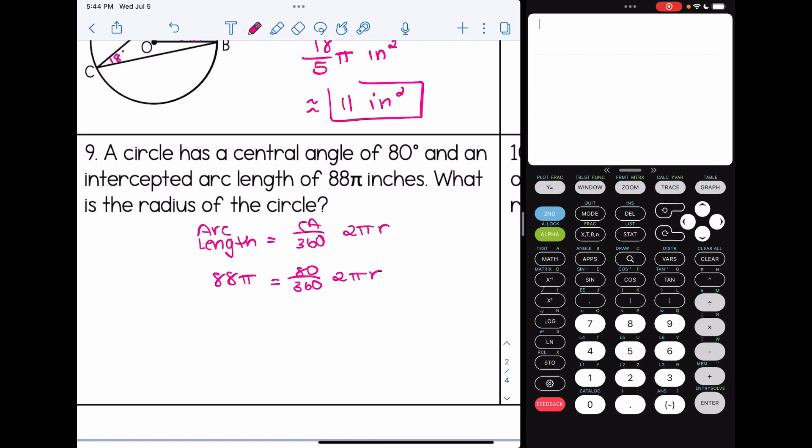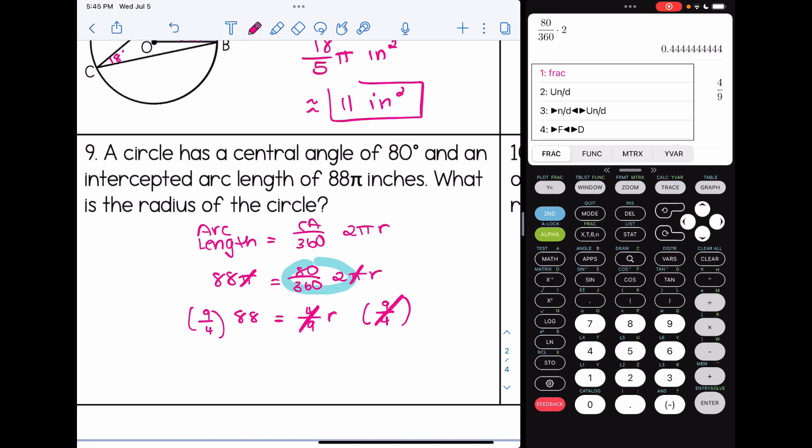And I'm going to look at something a little bit simpler in that case. When I'm doing this, if you want to simplify the right-hand side of the equation. So what I mean by that is the 80 over 360 times 2. We can simplify that. We get 0.4 repeating, which is 4 over 9. And I'm going to multiply both sides by the reciprocal now to isolate the variable. So I have 9 over 4 times 88. And the radius of my circle is 198 inches in this case.